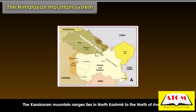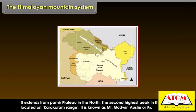The Karakoram mountain range lies in North Kashmir, to the north of the River Indus. It extends from the Pamir Plateau in the north. The second highest peak in the world is located on the Karakoram range — it is known as Mount Godwin Austin, or K2.